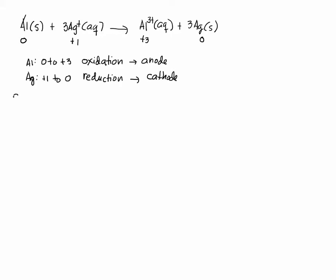OK, so to answer part A. The EMF in standard conditions is equal to the reduction potential at the cathode where reduction takes place minus the reduction potential at the anode where the oxidation takes place.